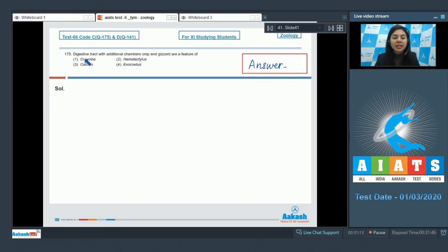Question 175: Digestive tract with additional chambers crop and gizzard are a feature of Columba, Hemidactylus, Calotes, or Exocoetus? The presence of crop and gizzard is a characteristic feature of arthropods.